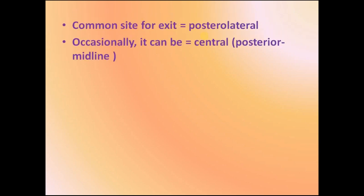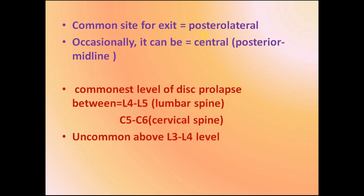I hope you understand all the stages of disc prolapse. The common site for the exit of disc prolapse is the posterolateral; occasionally it can be central, which is called the posterior midline. The commonest level for disc bulging in the lumbar spine is L4–L5, and in the cervical spine is C5–C6. It is uncommon at the L3–L4 level.